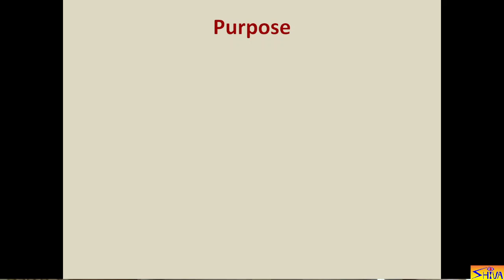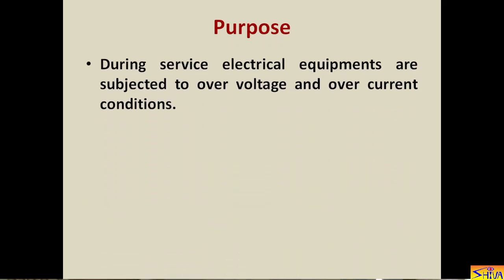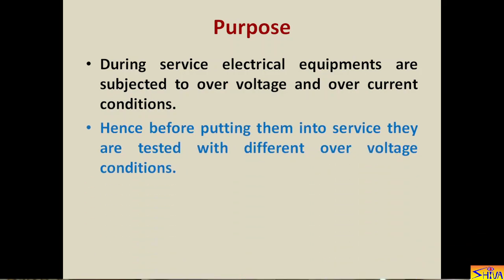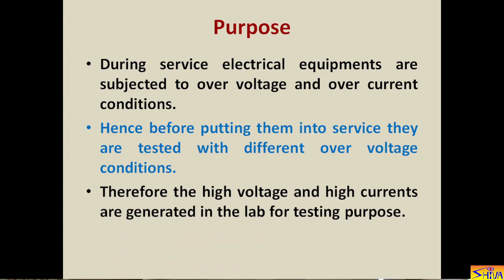Now let us see the purpose of generating high voltage and high current. During service conditions, electrical equipment is subjected to over-voltage and high current conditions. These over-voltages may be at power frequency, lightning over-voltage, switching over-voltage of impulse nature, or switching over-voltage at high frequency. Similarly, when a short circuit occurs the equipment must bear that short circuit current for a short duration, and when lightning over-voltage occurs, heavy lightning current flows and the equipment as well as the lightning arrester must bear that high current for a very short duration. Hence, before putting equipment into service, they are tested with different over-voltage conditions. Therefore, high voltages and high currents are generated in the lab for testing purposes.